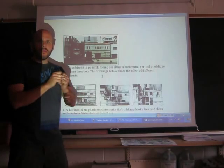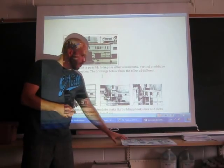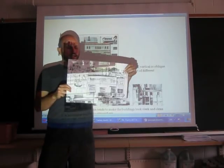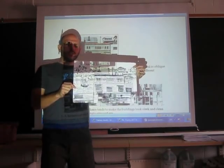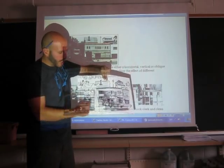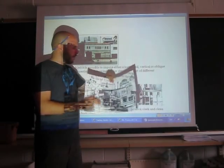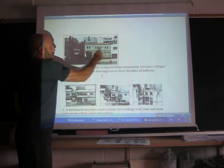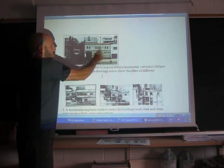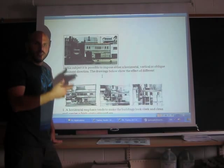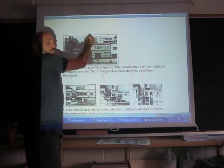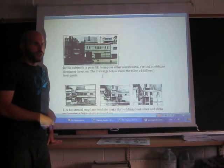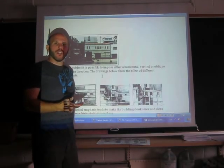One is going to be primarily using horizontal type of line, and the sample should look something like this. So I want you to draw the shell or the outline of the building, and then every other part that you shade in I want you to use just horizontal line. The second time you're going to do it again primarily using vertical lines, and the third time using primarily diagonal lines.